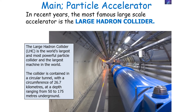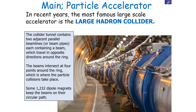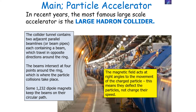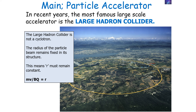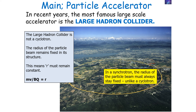The most famous large-scale accelerator in recent years is the Large Hadron Collider — the world's largest and most powerful particle collider. It is contained in a circular tunnel with a circumference of 26.7 kilometres at a depth of about 100 metres underground. It contains two adjacent parallel beam lines, each with a beam travelling in opposite directions, intersecting at four points around the ring where particle collisions take place, with about 1,200 dipole magnets keeping the beams on their circular path. The Large Hadron Collider is not a cyclotron — the radius of the particle beam remains fixed, making it a synchrotron.